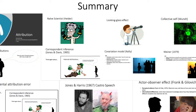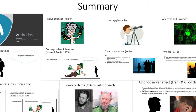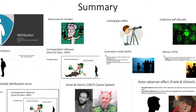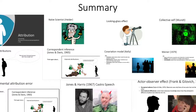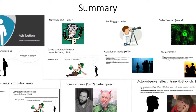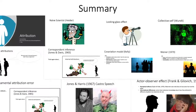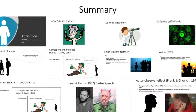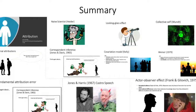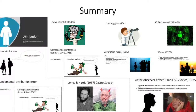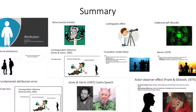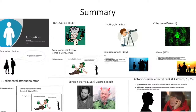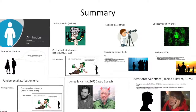In summary, this video looked at attribution, Heider's naive scientists, internal and external attributions, misattributions, correspondent inference, and the covariation model by Kelly — including consensus, distinctiveness, and consistency (CDC). We also looked at Weiner's information in attribution-making: locus, stability, and controllability (LSC). In addition, we discussed fundamental attribution errors, the Castro speech experiment by Jones and Harris in 1967, the actor-observer effect by Frank and Geolovic in 1989, and perceptual salience and informational differences by Taylor and Fisk in 1975.